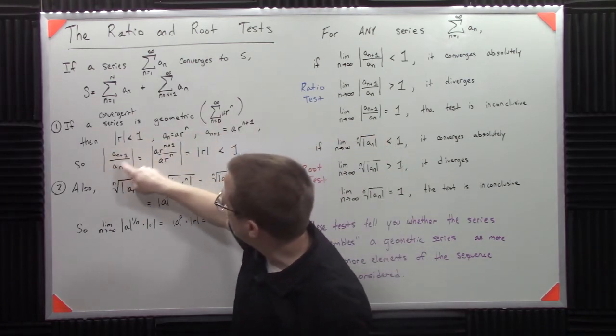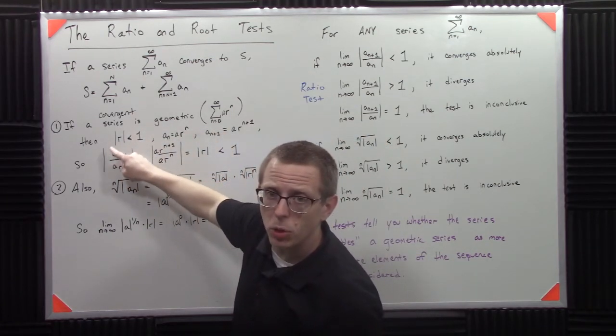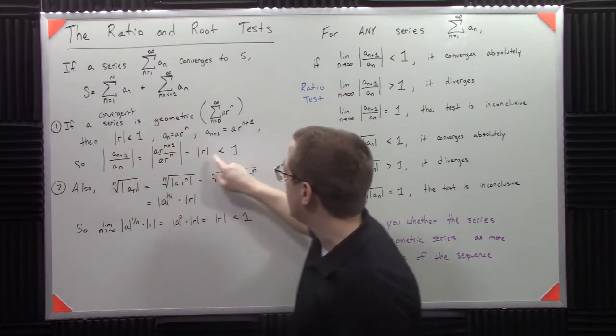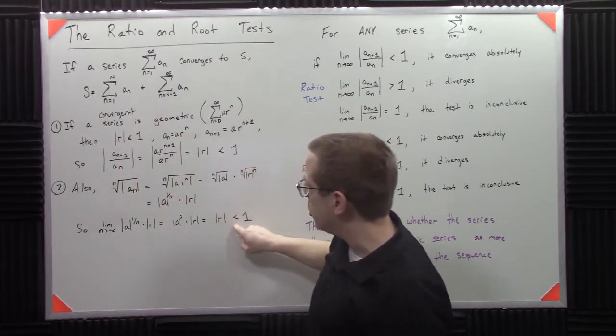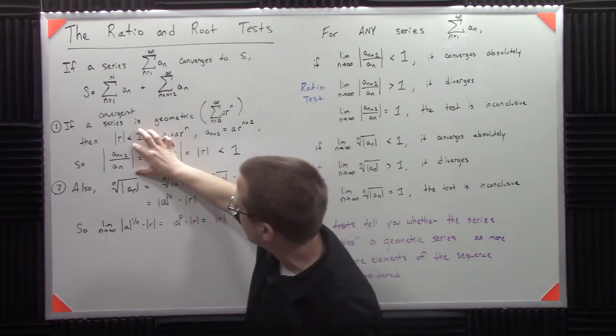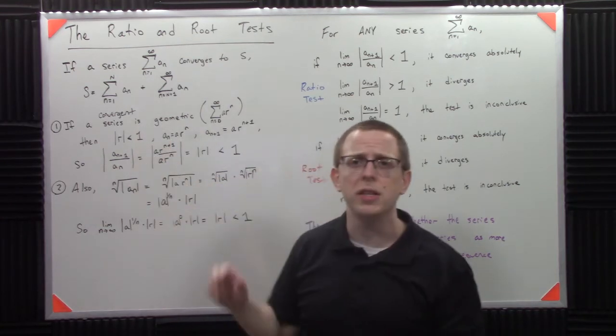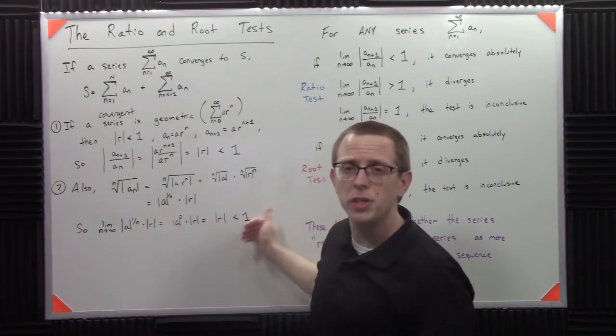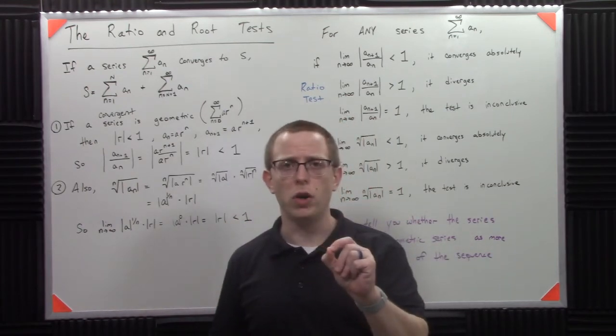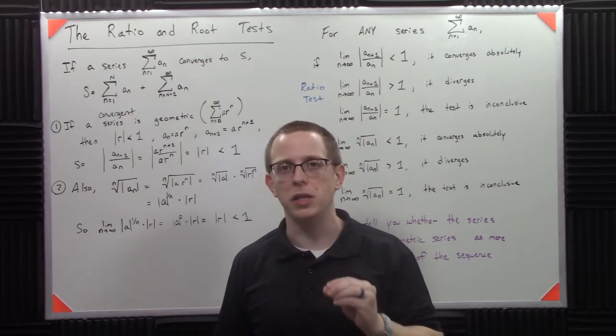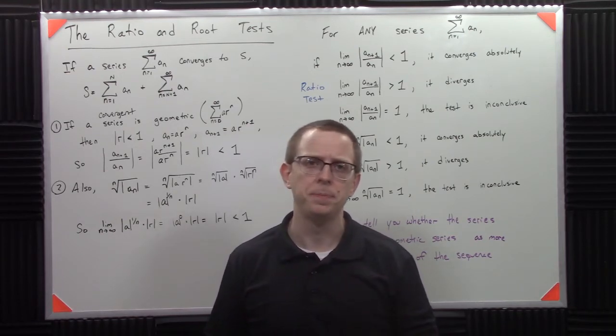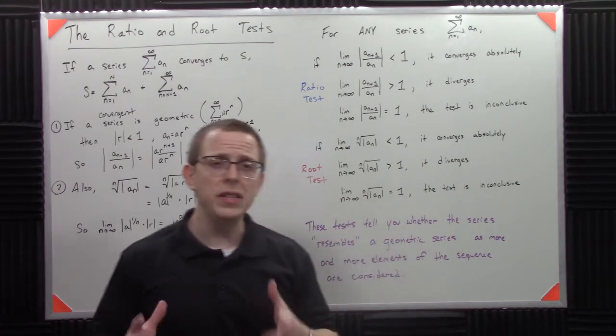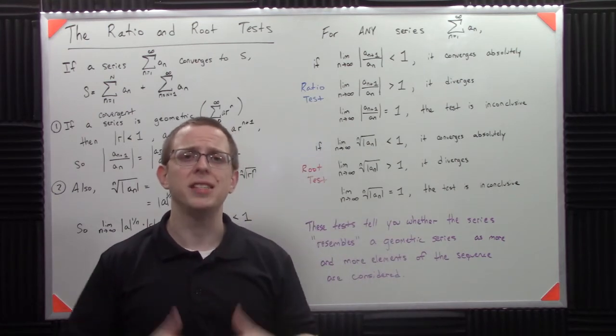If I can look at this ratio for a geometric series and get the same kind of results, or I look at that nth root and say, well, long term it behaves just like a geometric series, then I know it's going to converge because I know geometric series always converge. They absolutely converge, in fact. So this sets up the idea of what we call the ratio test and the root test.